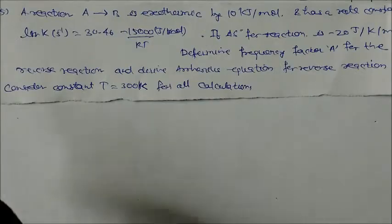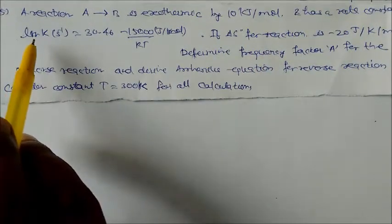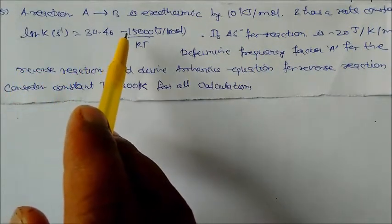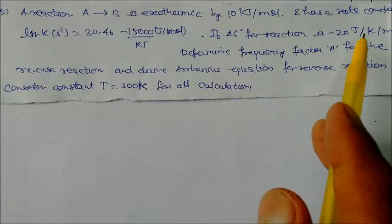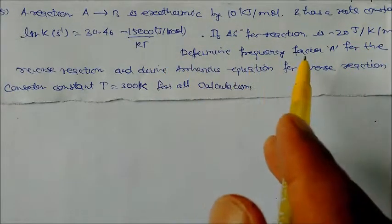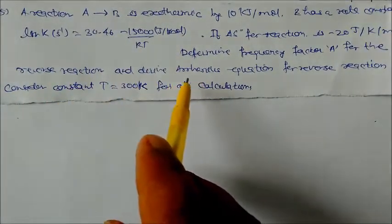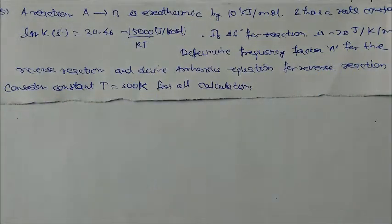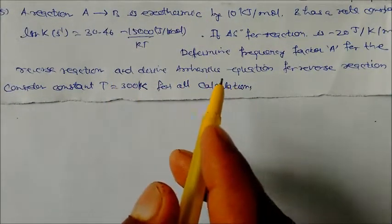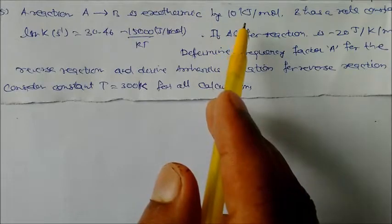Next problem: A reaction A to B is exothermic by 10 kJ/mol and has rate constant given by ln k = 30.46 minus 15000/(RT). The standard free energy for the reaction is minus 20 kJ/mol/K. Determine the frequency factor for the reverse reaction and write the Arrhenius equation for the reverse reaction at 300 K.